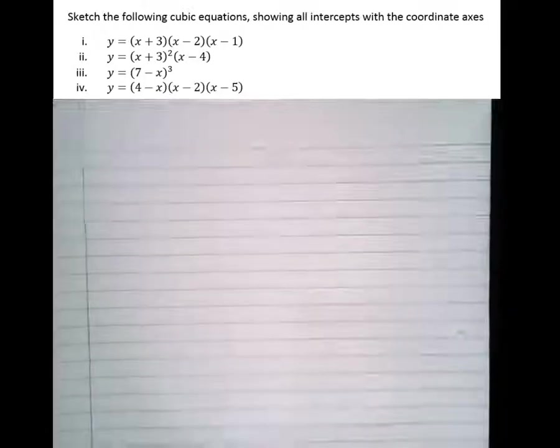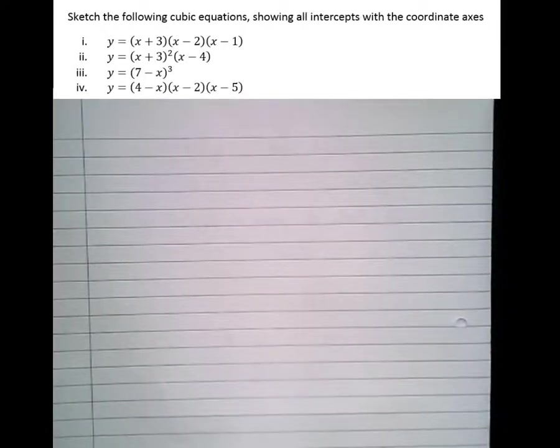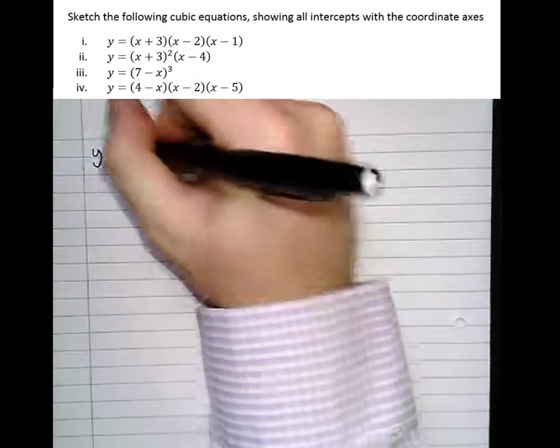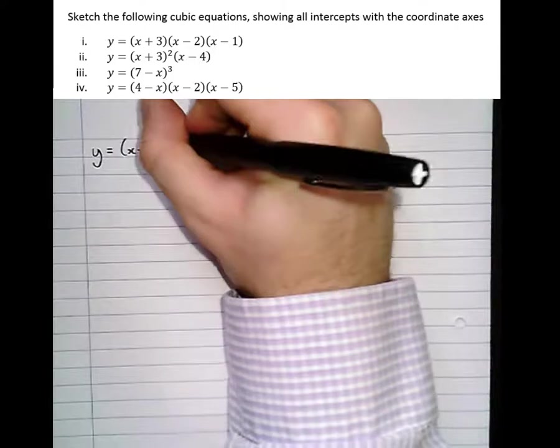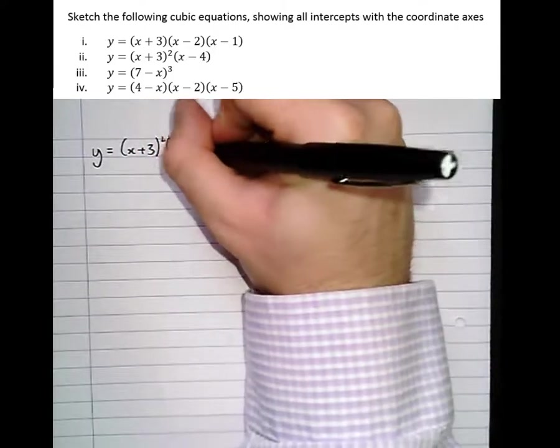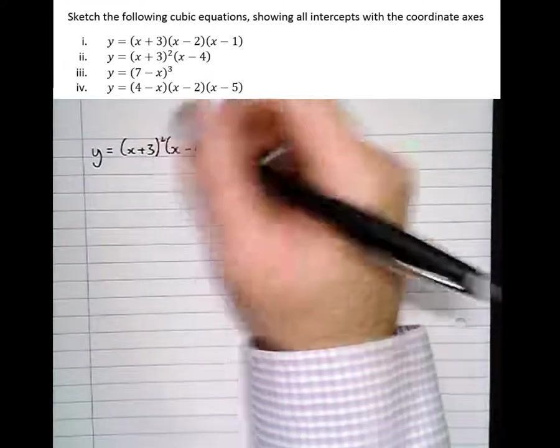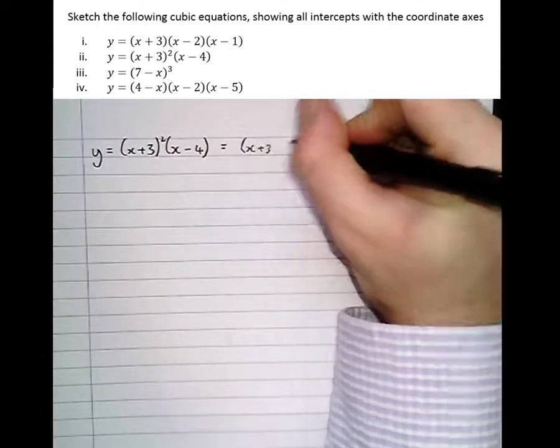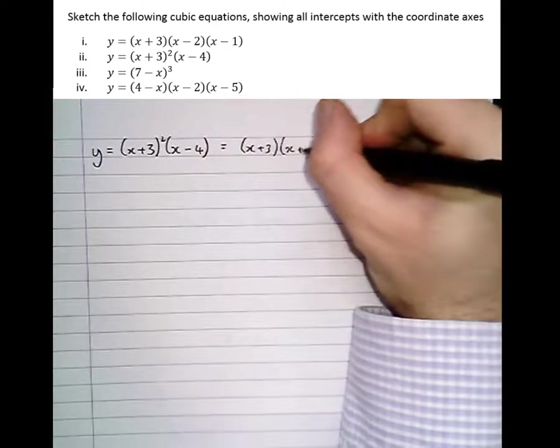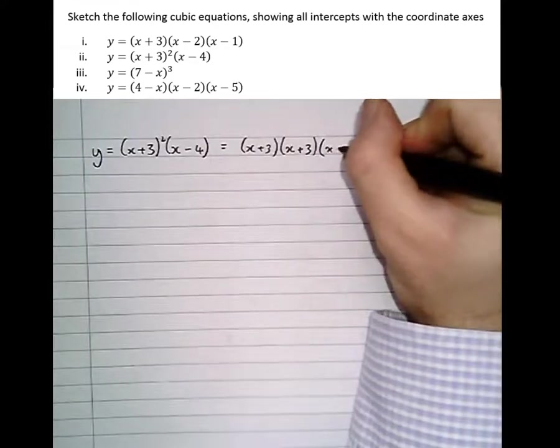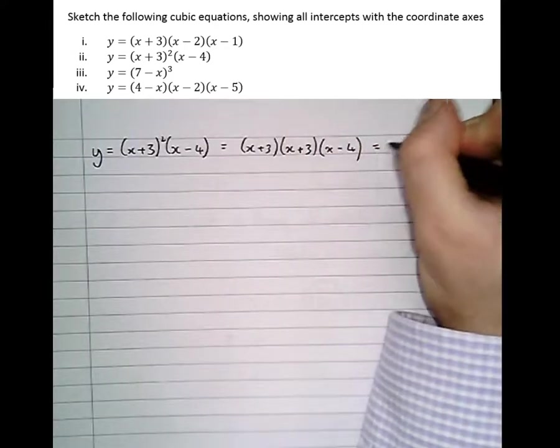So let's do the other two. So part two, y was (x + 3)²(x - 4). Let's do that one. Y equals (x + 3)²(x - 4). So let's get the x-intercepts. Well, actually, if I write that out in full, that's (x + 3)(x + 3)(x - 4). And we want where y equals 0.